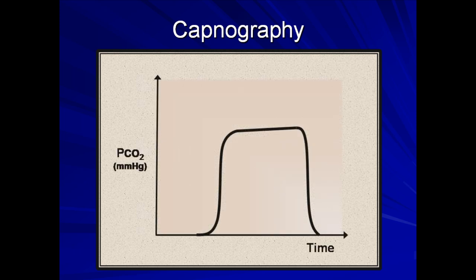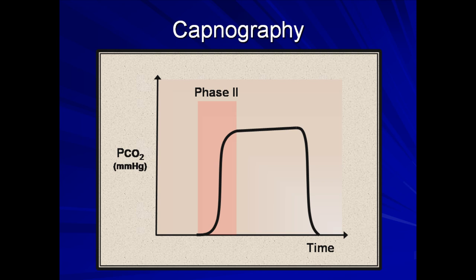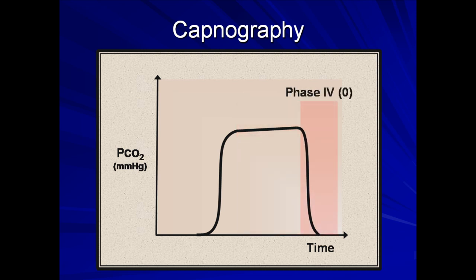Continuous capnography produces a waveform for each breath with a characteristic shape known as a capnogram. Abnormalities of shape and magnitude can provide information about the patient's cardiopulmonary system. There are typically four phases of the capnogram. Phase one consists of the exhalation of CO2-free gas in the anatomic dead space, including ventilator tubing distal to the CO2 detector. Phase two consists of the exhalation of a mixture of alveolar and dead space gas. Phase three, during which a plateau is usually reached, consists solely of exhaled alveolar gas. Phase four — which some sources label as phase zero — consists of inhalation, at which point the CO2 concentration rapidly drops back to zero.